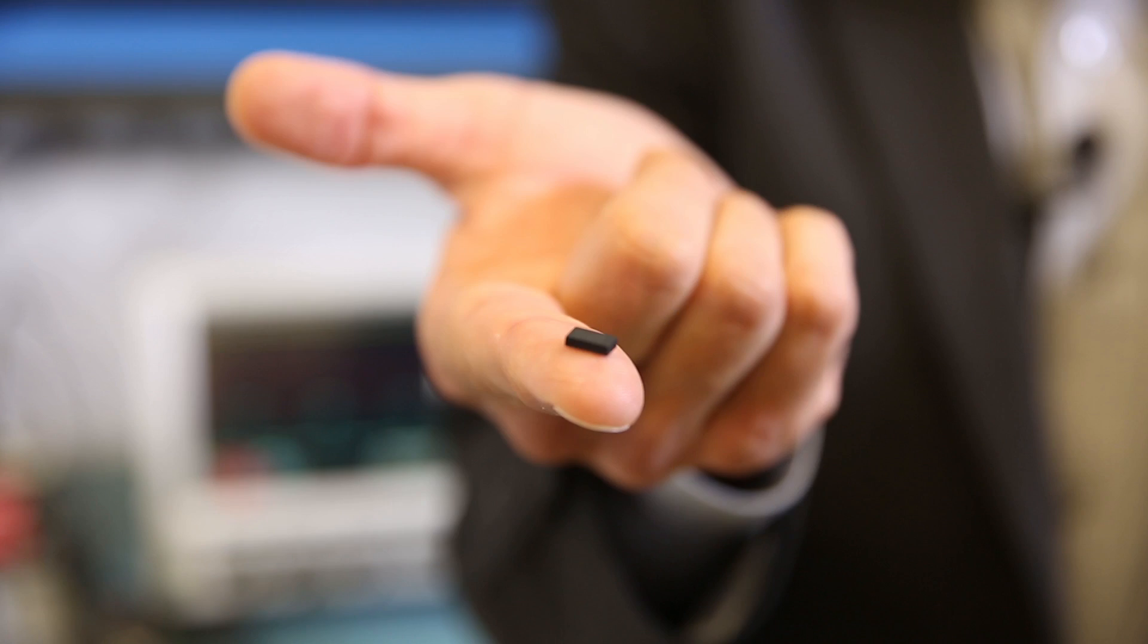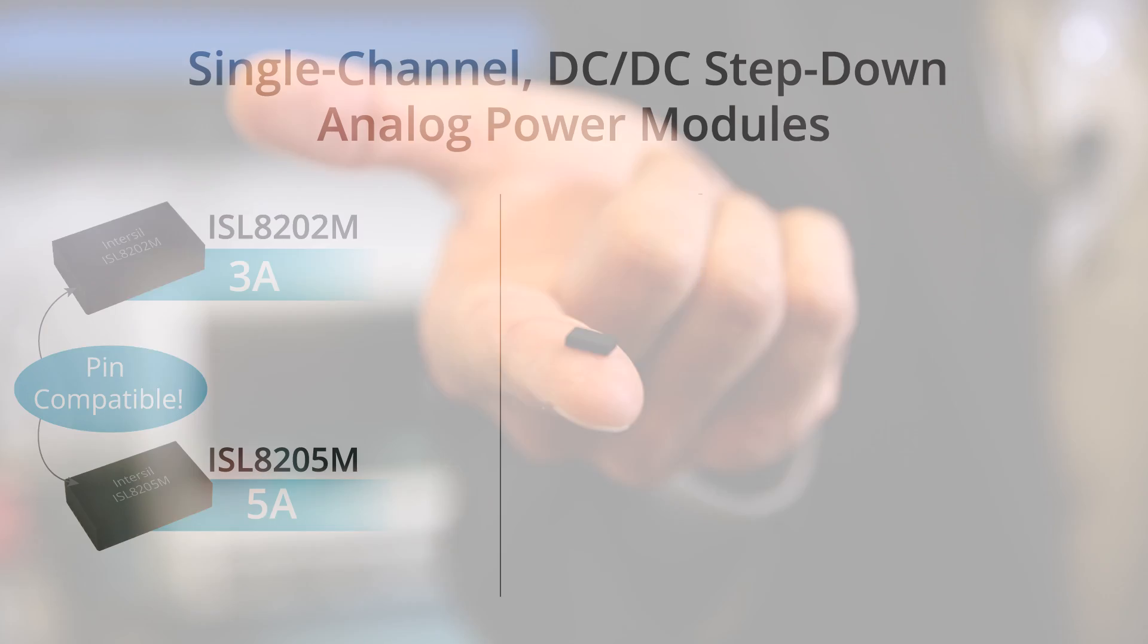The ISL8202M and ISL8205M integrate all those components in a small 4.5mm by 7.5mm package, reducing the guesswork related to developing a point of load solution.